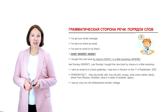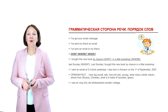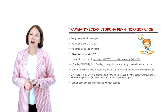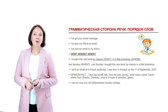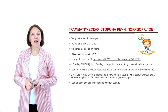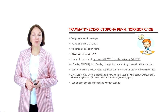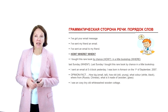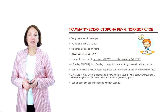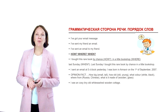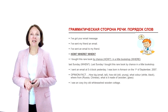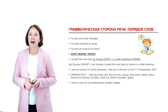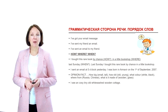То есть, при наличии всех видов обстоятельств на первое место ставится обстоятельство образа действия, на второе — обстоятельство места, а на третье — обстоятельство времени. How, where, when. Например: I bought this rare book by chance in a little bookshop last Sunday. Хотя обстоятельство времени может стоять и на самом первом месте: Last Sunday I bought this rare book by chance in a little bookshop. При наличии нескольких обстоятельств времени более точные указания на время ставятся раньше более общих: I sent an email at 5 o'clock yesterday. I was born in Armavir on the 1st of September 2007.